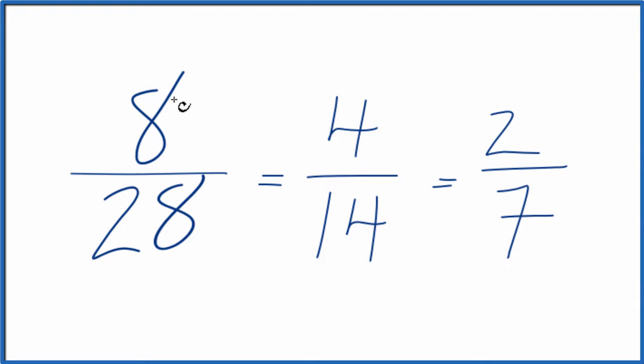So the fraction 8 28ths, it's equivalent to 4 over 14 and 2 over 7. But 2 7ths, this is the lowest term. This is the most simplified form we can have.